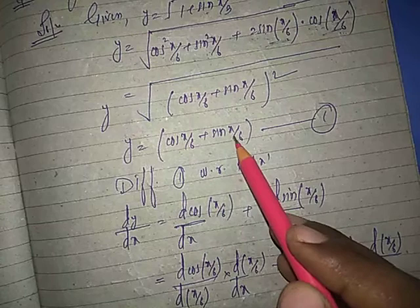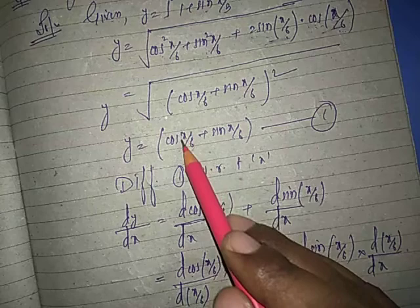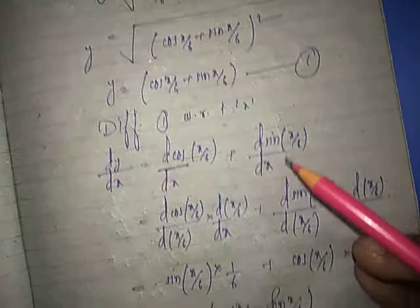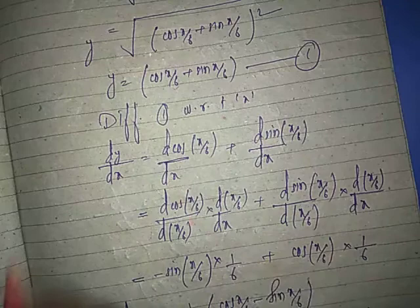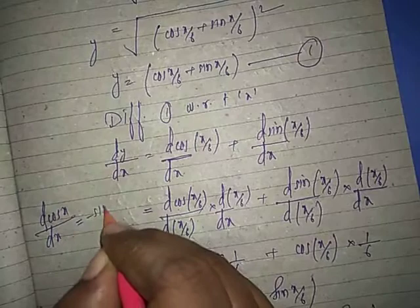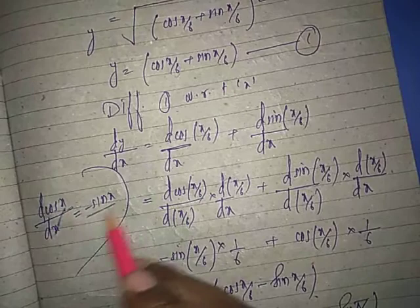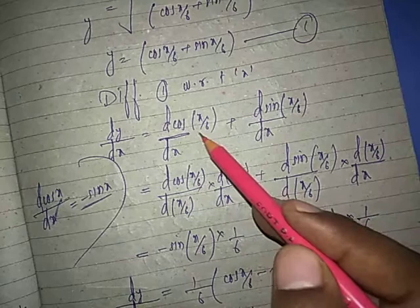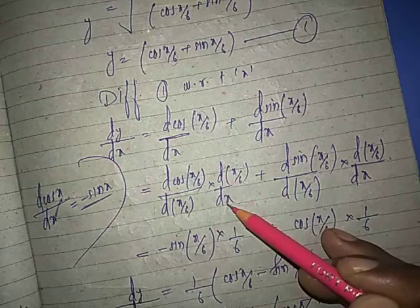Here x by 6 is in place of x, so chain rule will be used. Differentiating both sides with respect to x, d by dx. But there's a mismatch, so we need to match it. The differentiation of cos x is minus sin x, so we need to set it up properly. We adjust to match the formula.